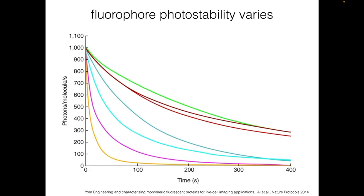Here's an example of how photobleaching compares between some selected fluorophores. On the y-axis, we have the light output of the sample in photons per molecule per second. The researchers normalized their data so that the approximate rate of excitation is the same for all the fluorophores. They then kept the fluorophores under constant illumination with the appropriate excitation light and measured the intensity over time. Each curve represents a different fluorophore. After 100 seconds, for example, the yellow curve is down to about 3% of its initial intensity — indicating 97% of those fluorophores have photobleached — whereas the green curve still retains about 70% of its initial fluorescence.